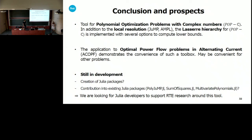For future work, we are going to collaborate with Carleton Coffrin to integrate our work into his module PowerModels.jl. We are going to implement the conversion using polar form, work again on resolution using JuMP with new versions, and implement other conic relaxations such as SOCP. To conclude, we have presented a tool for polynomial optimization problems with complex variables: we can solve problems locally, but also compute lower bounds using the LASER hierarchy. The application to optimal power flow demonstrates the convenience of such a toolbox, and it may be convenient for other problems originally formulated in complex numbers. We are thinking about creating Julia packages and are looking for Julia developers to support RTE research around this tool.